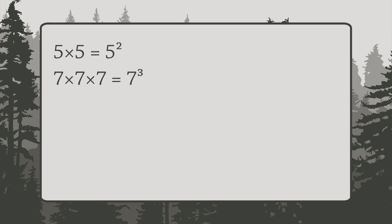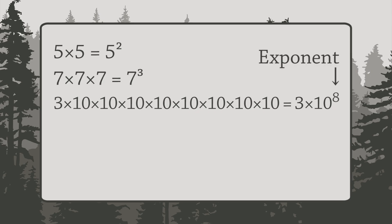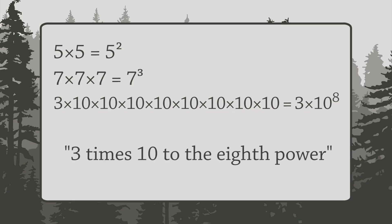Using exponents, we can write 3 times 10 times 10 times 10 times 10 times 10 times 10 times 10 times 10 times 10 like this. The exponent is 8, because we're multiplying 8 tens. You say this aloud as 3 times 10 to the 8th power.